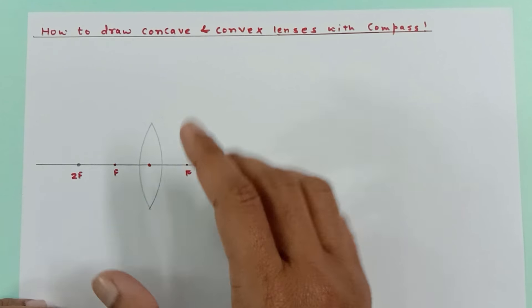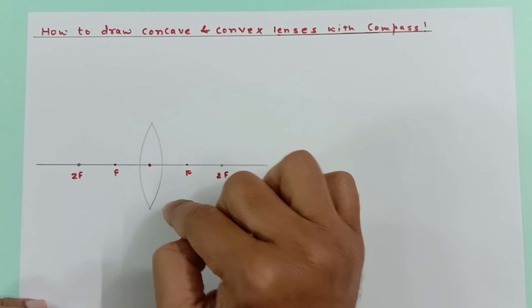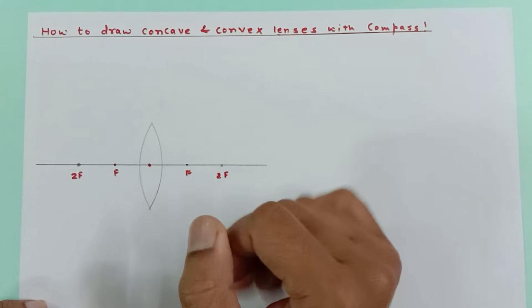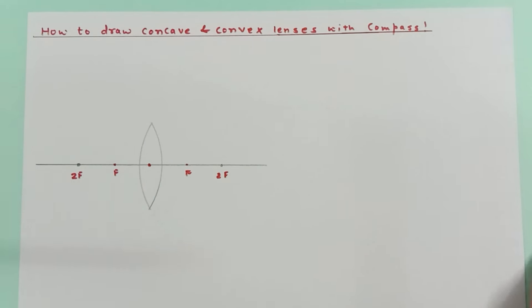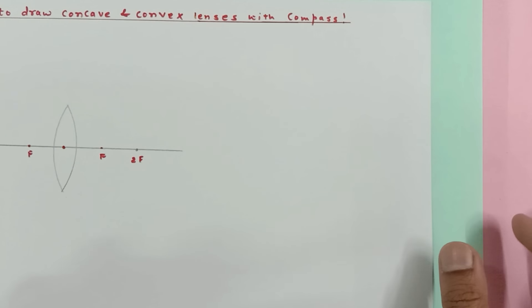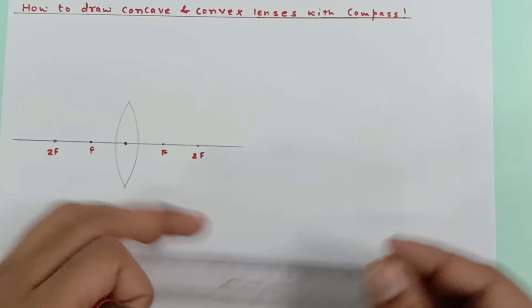Now if you do the image formation with the help of this diagram, it will be all perfect. Now let's go for the concave lens. For that again, you require a straight line.